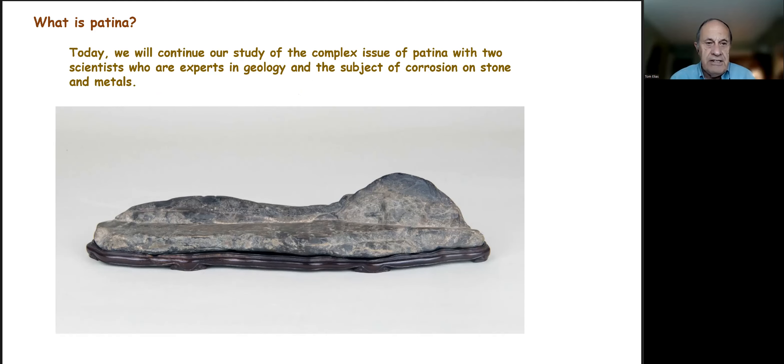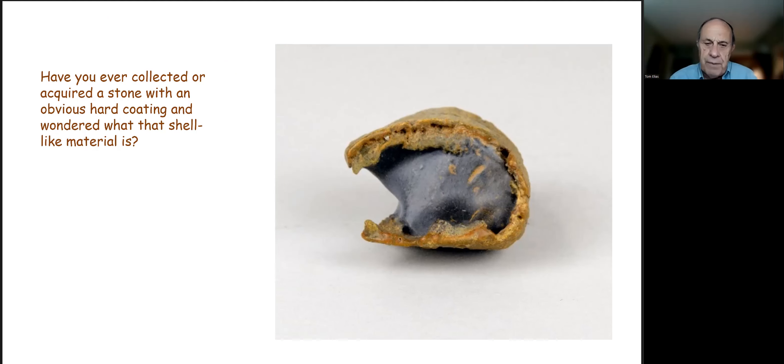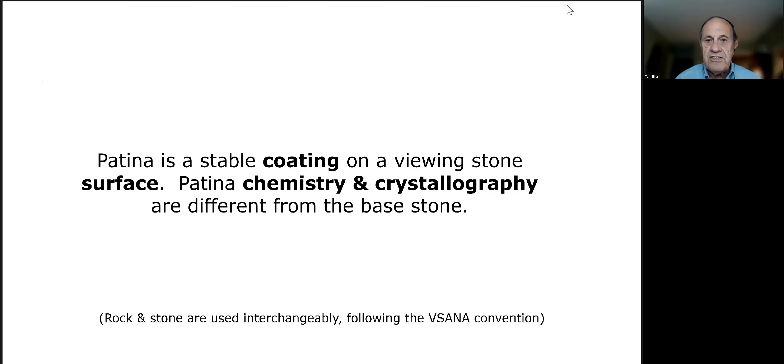Today we're going to continue the study of this complex issue and look at some of the stones that they've collected and that other people have collected. For example, this is a stone from the desert areas of Southern California. I picked up stones like this before over many years, and I've noticed they've had a hard coating or shell around it, and I've always wondered what this is. Today we're going to find out. So with this, I'm going to turn the program over to Steve and let him pick up and run with it from here.